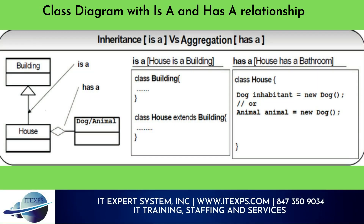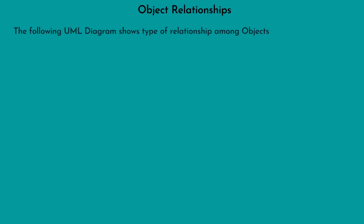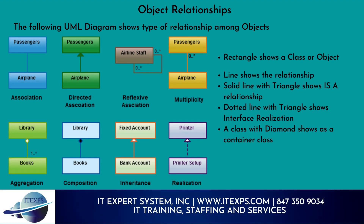Here is a class diagram showing both 'is-a' and 'has-a' relationships. The following UML diagram shows the types of relationships among objects. A rectangle represents a class or object. A line shows a relationship. A solid line with a triangle shows an 'is-a' relationship. A dotted line with a triangle shows interface realization. A class with a diamond shows a container class.